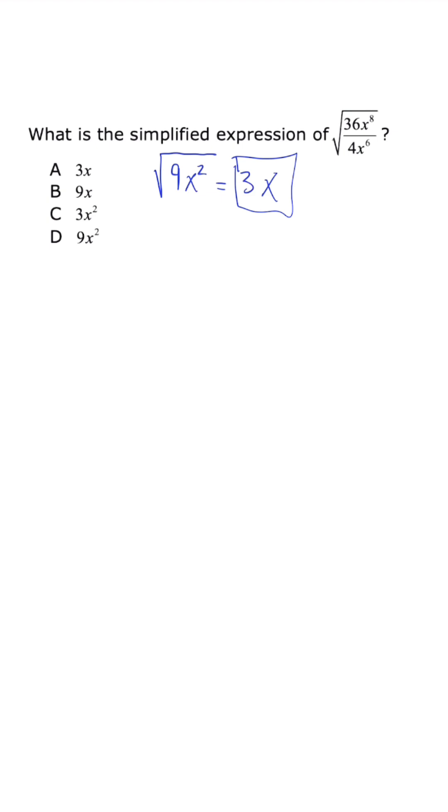The reason why this works is because of common factors. So what do I mean? When we split these radicals apart, the numerator is 9 times 4 times x to the eighth, and in the bottom we just have 4 times x to the sixth.